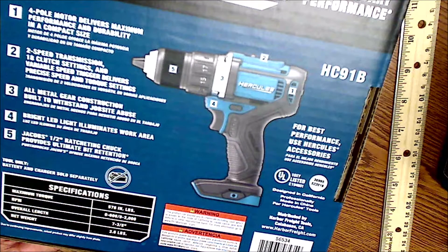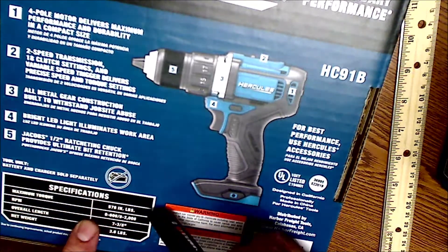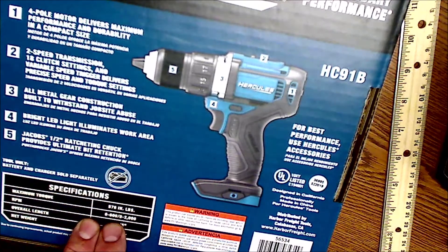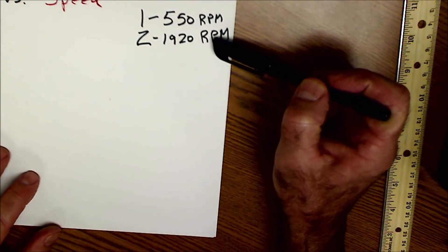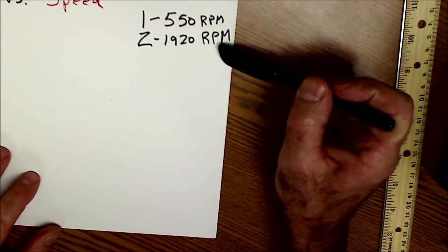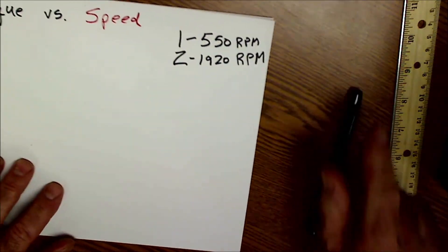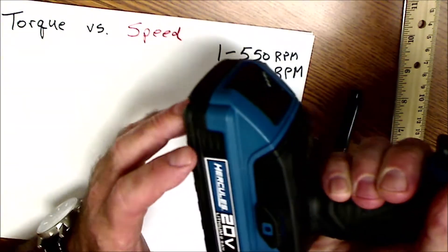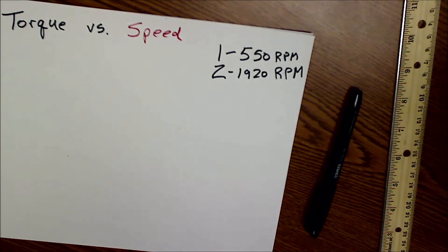Here's the box the drill driver came in. It shows 576 inch-pounds of torque, speed one at zero to 600 RPM, and speed two at zero to 2,000 RPM. Our readings were amazingly close: 550 RPM on speed one and 1,920 RPM on speed two. The battery may not have been fully charged, but our measurements are surprisingly accurate — only a few percentage points off from the manufacturer's specs.